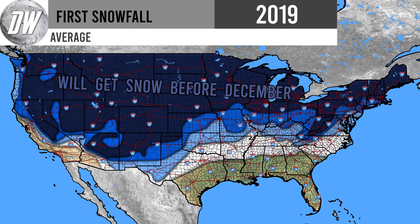We're looking at the average snowfall for November. Ignore the medium light blue and white colors — that's where snowfall is expected later than November. In that deep dark blue, almost black color, that's where snowfall is expected before December — so November, October, September, and even August in a few regions of the Rockies. These are the areas where you will on average see snowfall in the month of November.